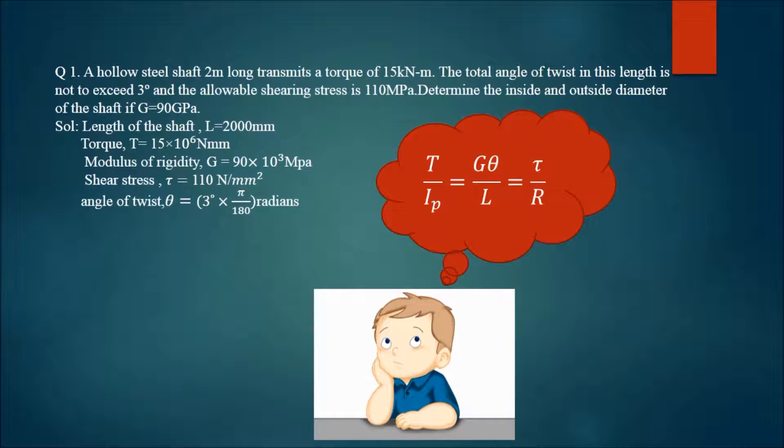G is the modulus of rigidity, θ is the angle of twist, and L is the length of the shaft. τ is the shear stress, and R is the radius, which is the external diameter divided by 2.